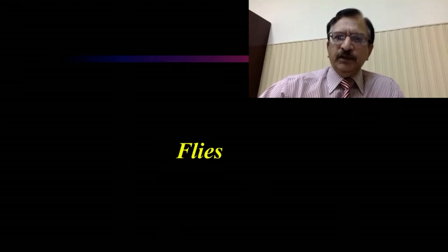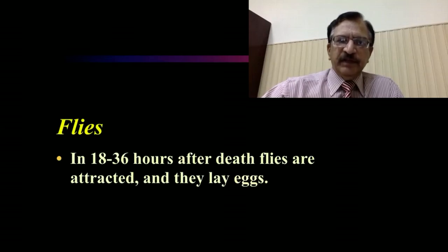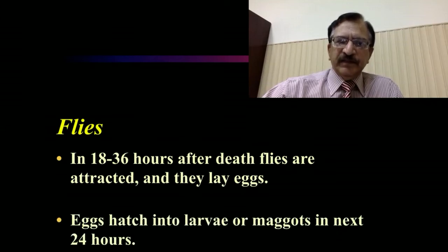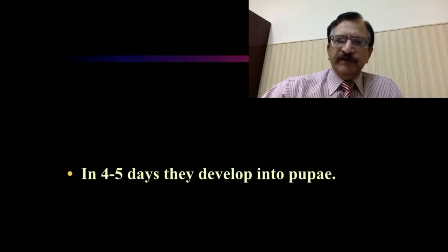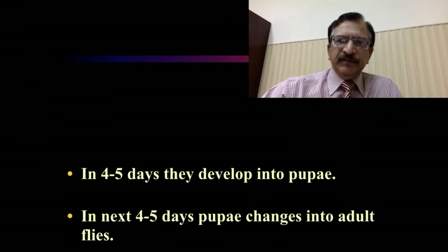Regarding flies: we study the life cycle and the various stages, then estimate the time since death. This is also circumstantial evidence. In 18 to 36 hours after death, flies are attracted and they lay eggs. Eggs hatch into larvae or maggots in the next 24 hours. In 4 to 5 days they develop into pupae, and in the next 4 to 5 days the pupae change to adult flies. By examining which stage — larvae, pupae, or adult flies — is present, we can estimate the time since death.